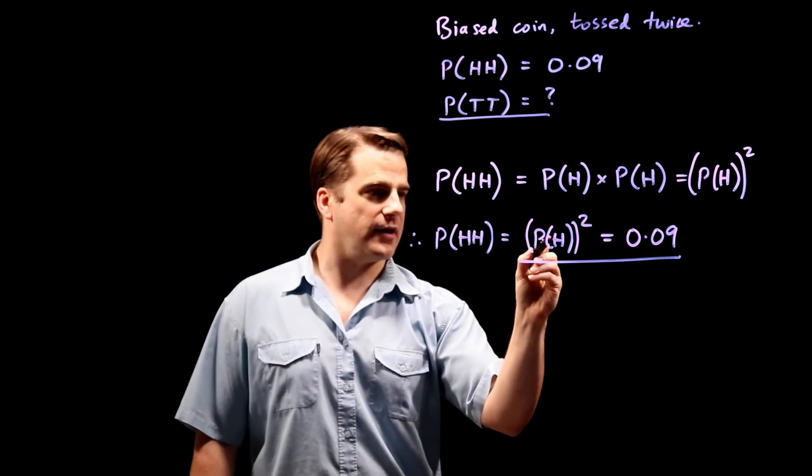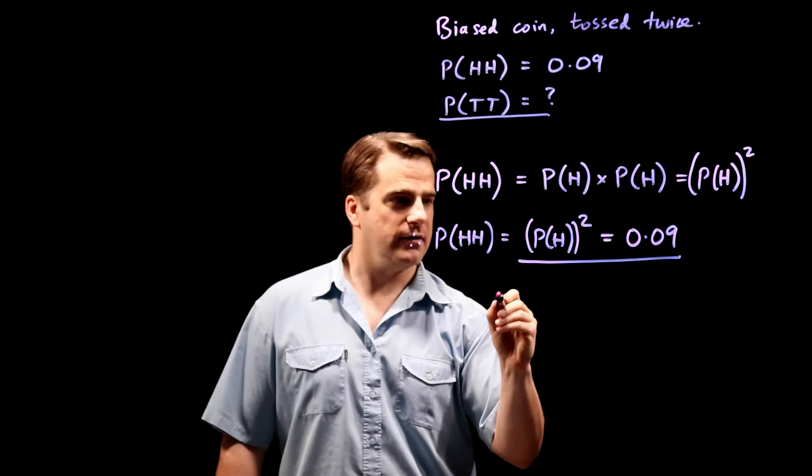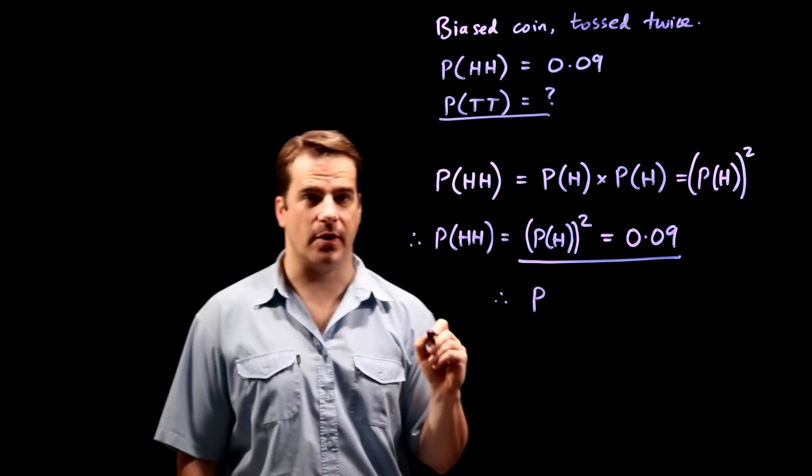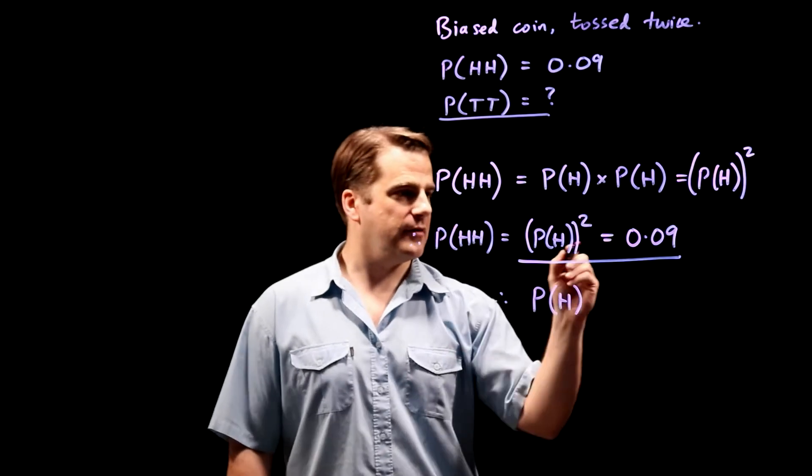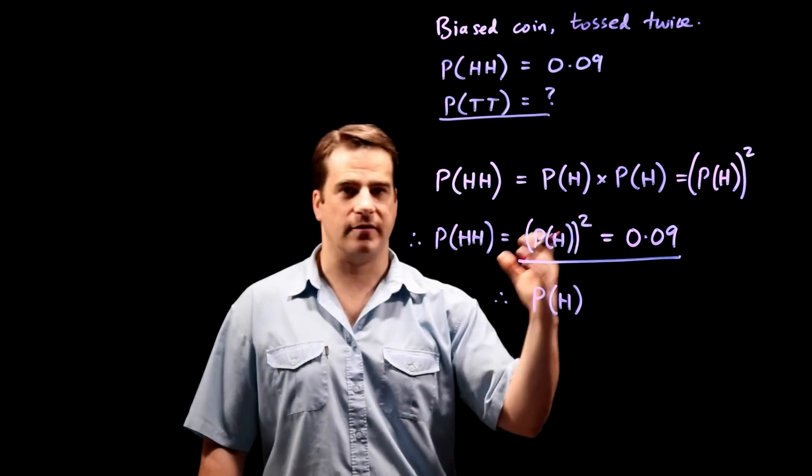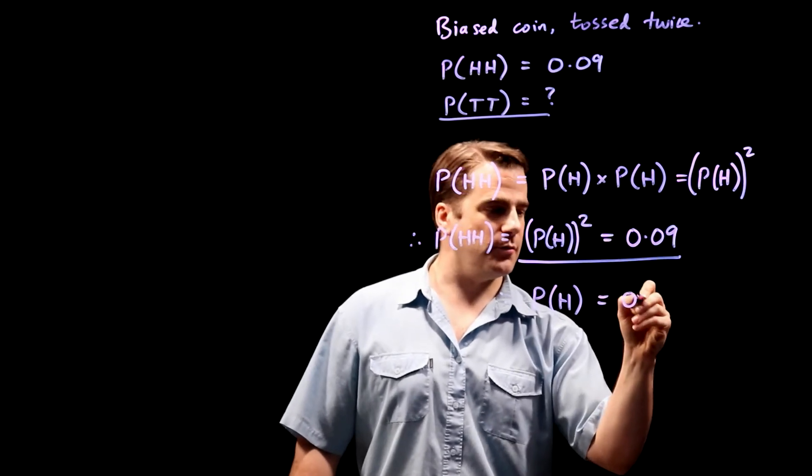If the probability of getting a head with a single flip, squared, is 0.09, therefore, take the square root of both sides. Probability of getting a head with a single flip, you can't have negative probability, so take a positive solution, square root that, which is 0.3.